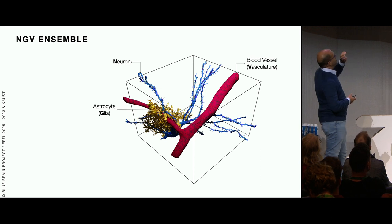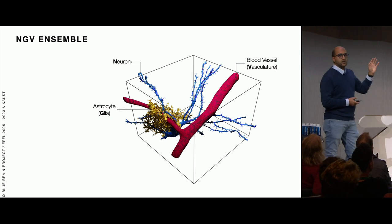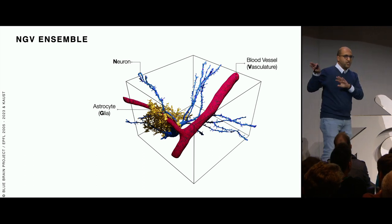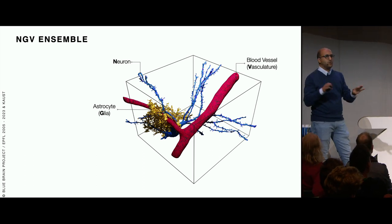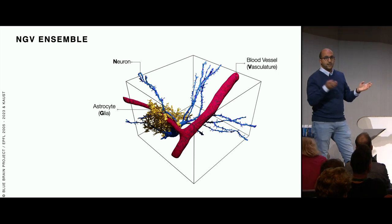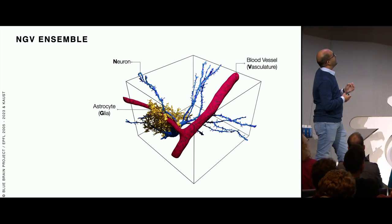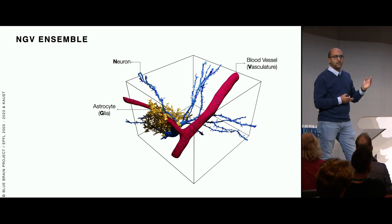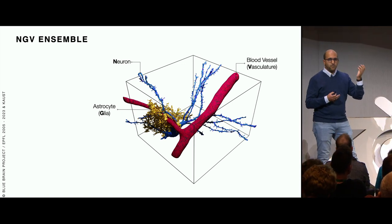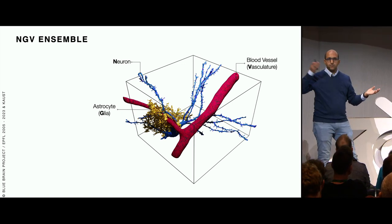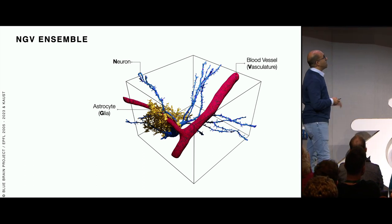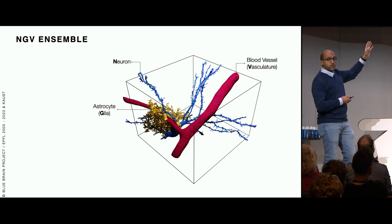We build these models in a supercomputer. If we remove the mess - there are different types of cells - we need to focus on neurons, astrocytes, and glia. Neurons you probably know; blood vessels have blood going through them; and the astrocyte is the cell that transfers energy from the blood vessel to the neuron. That's the biology we need to know.